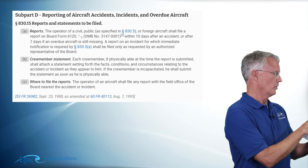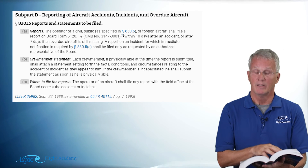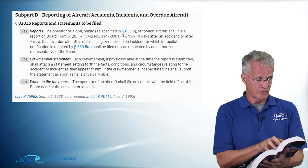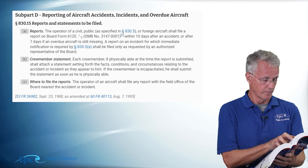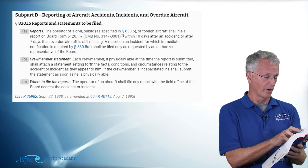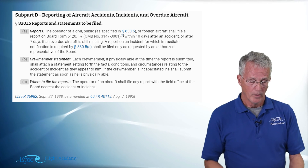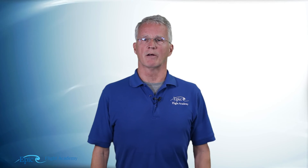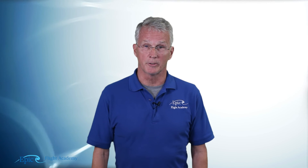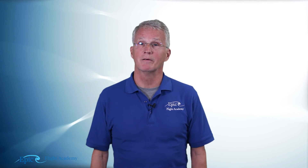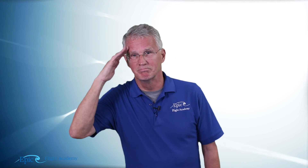Subpart D talks about reporting of accidents, incidents, and overdue aircraft. Reports to the NTSB must be made within 10 days after an accident, or within seven days if the aircraft is overdue. That covers the key pieces of the actual regulation. Be sure to review all of this with your flight instructor. That wraps it up for our review of the NTSB requirements — we'll see you next time.